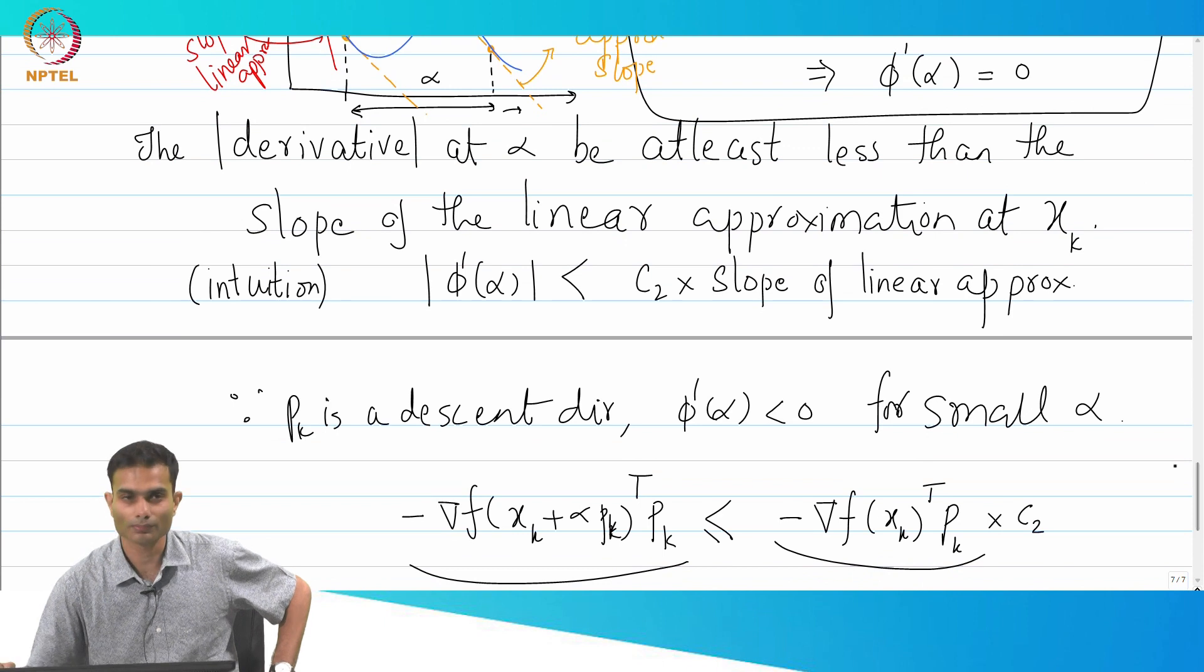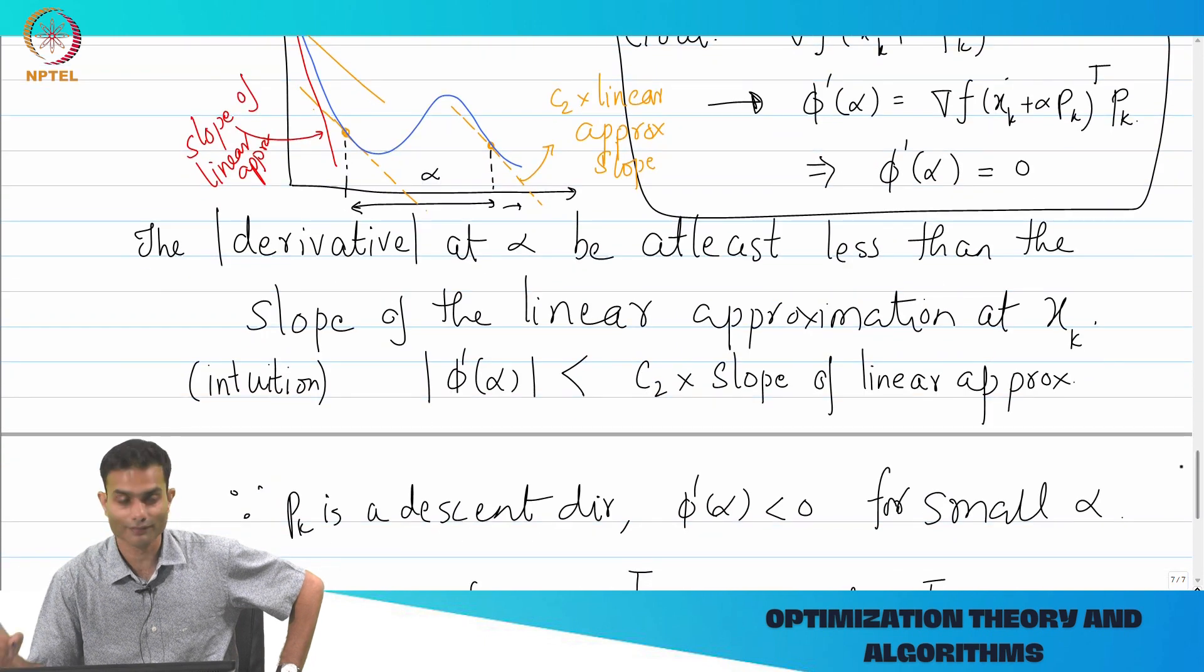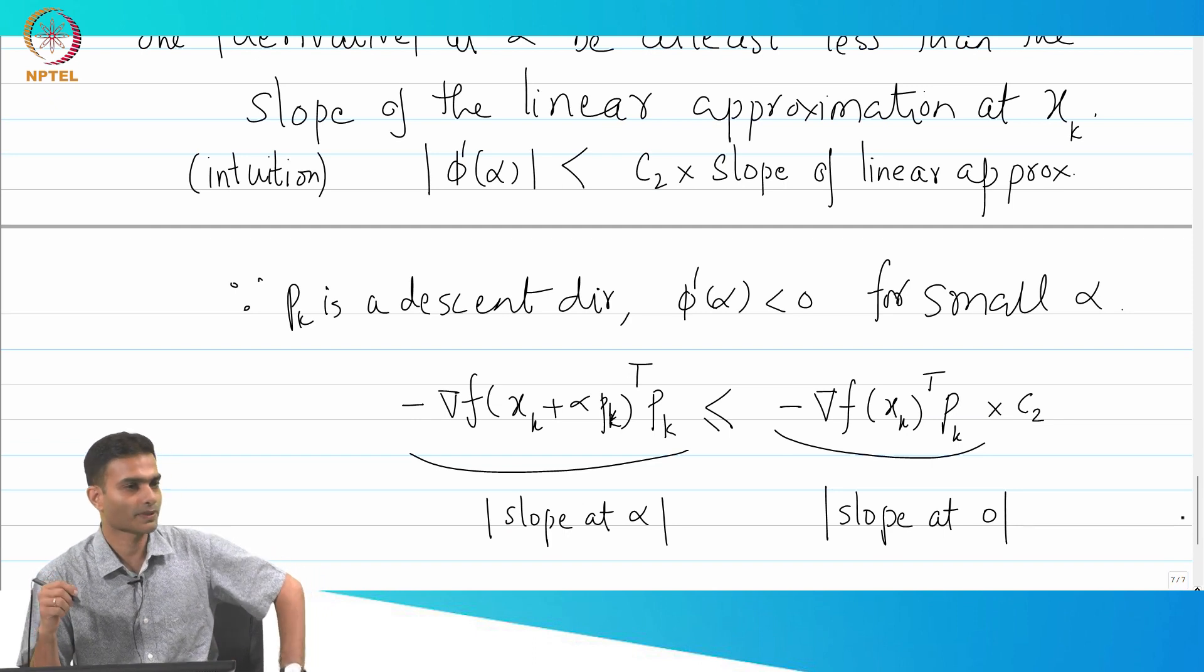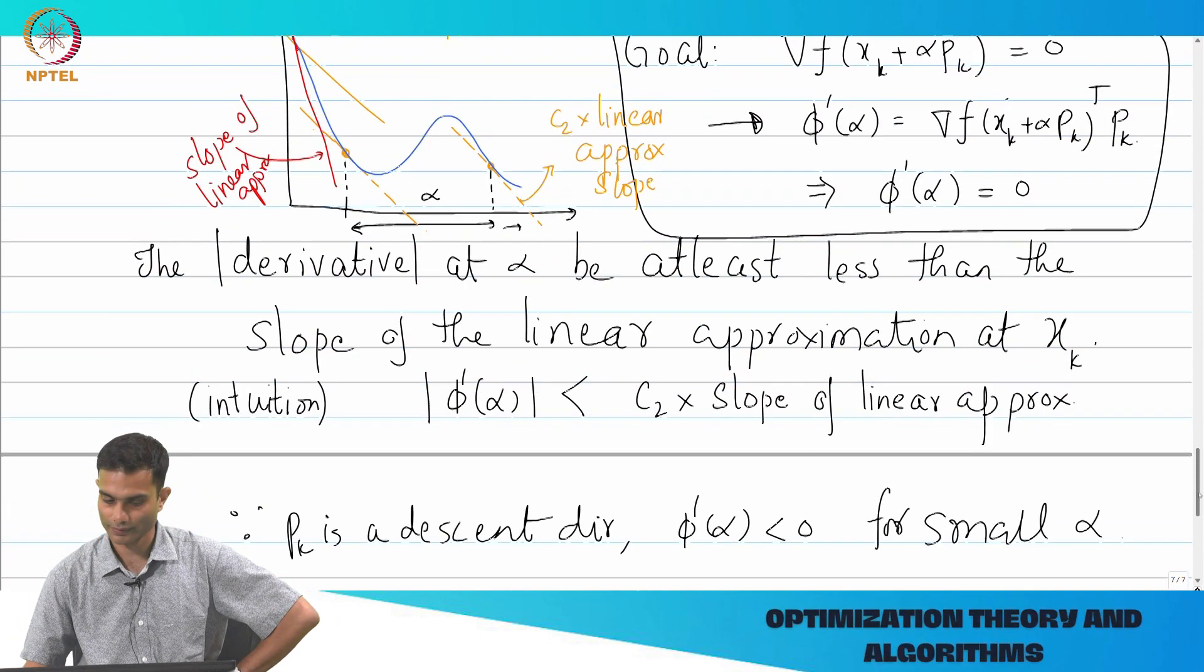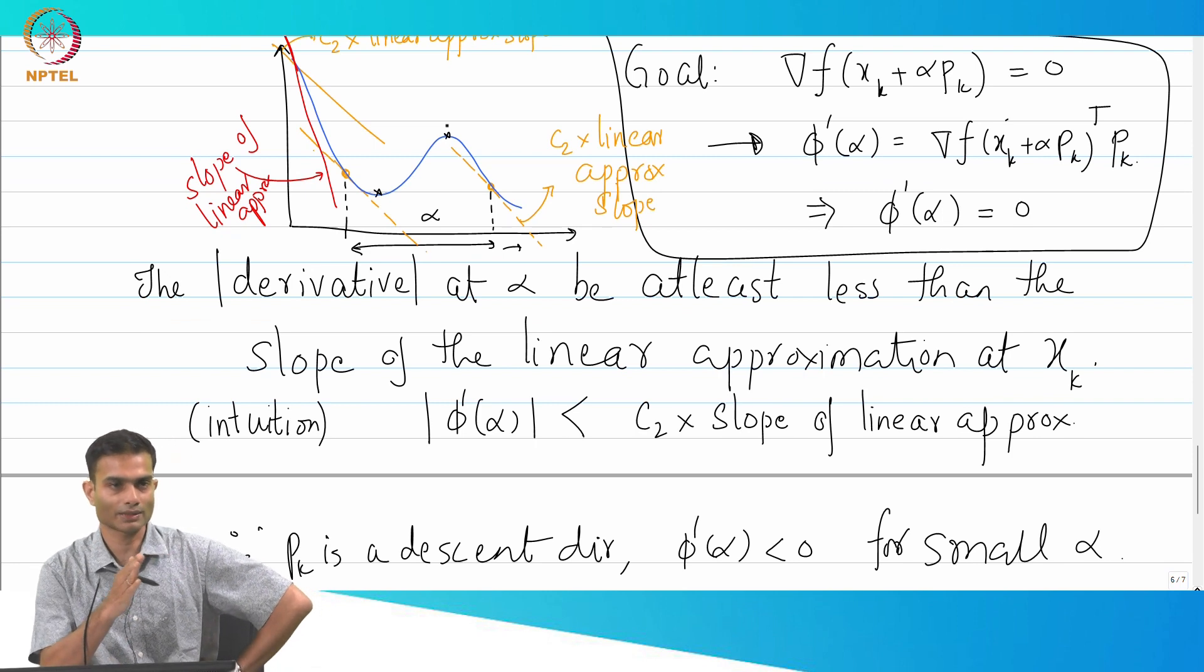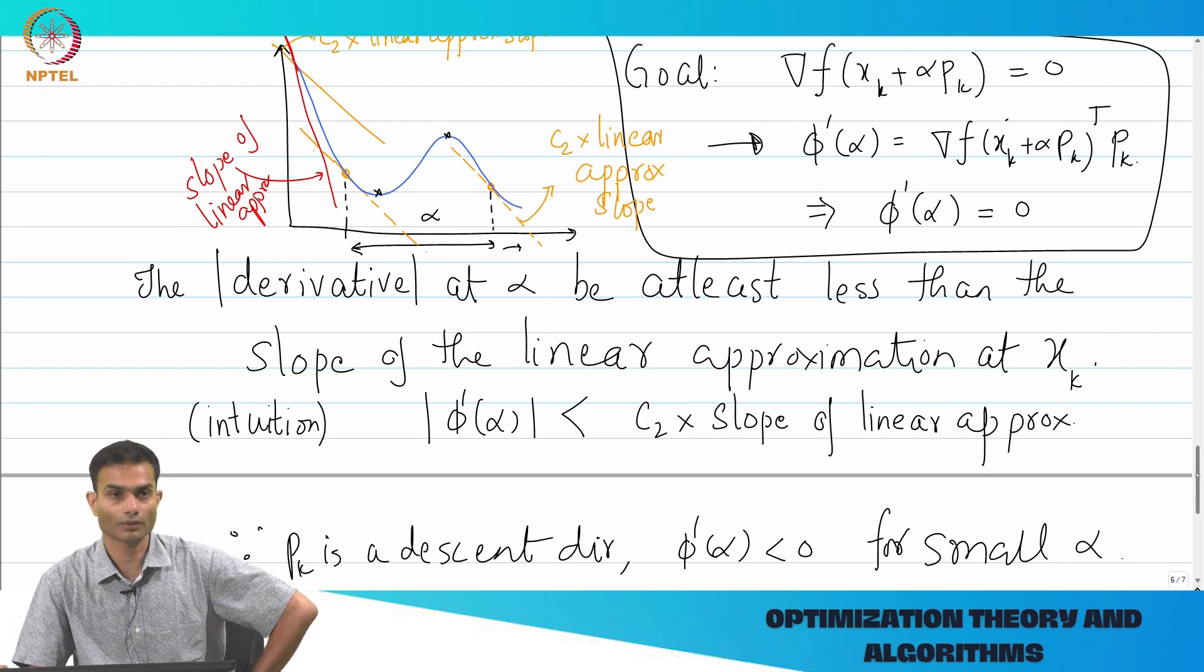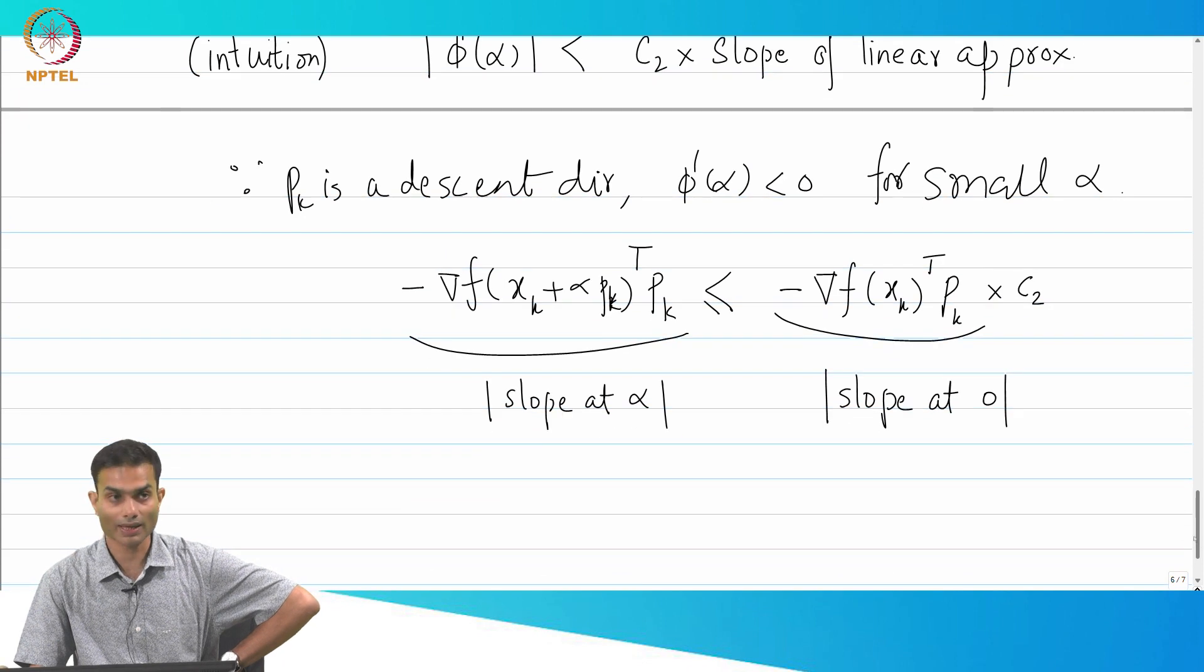Now, do you foresee a problem? This is heading in the right direction, but do you see a problem with this expression when we wrote it down like this? What happens when α goes past the stationary point? Look at this graph. There is one stationary point here and one here. So let's say I started from the left and I am increasing α. Once I go past the first stationary point, what happens to the sign of φ' of α?